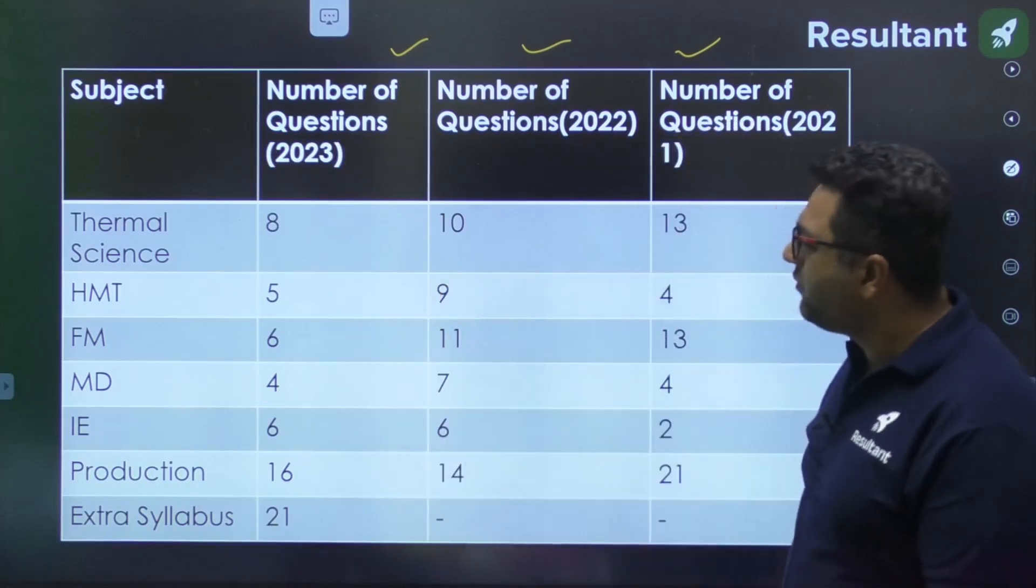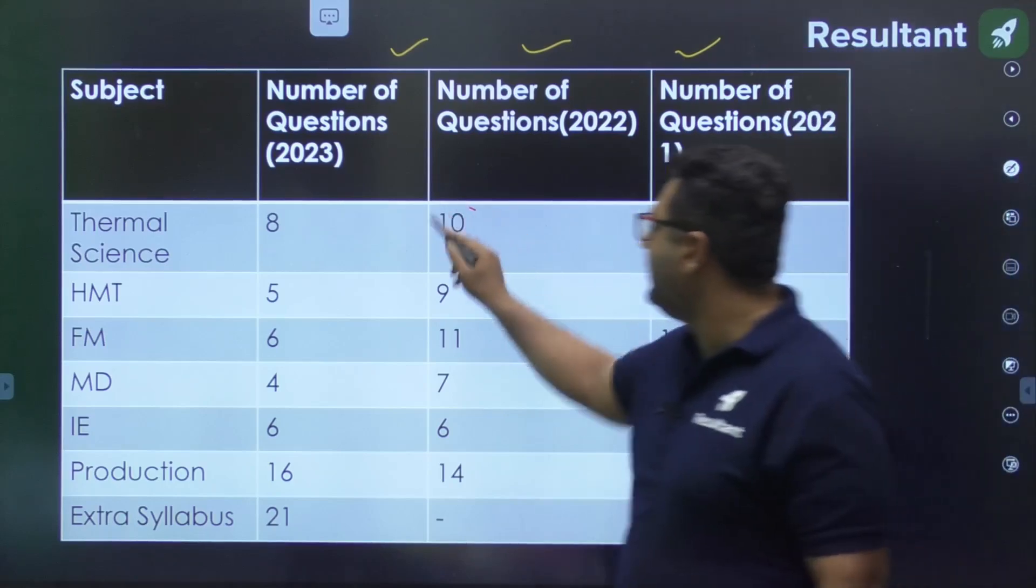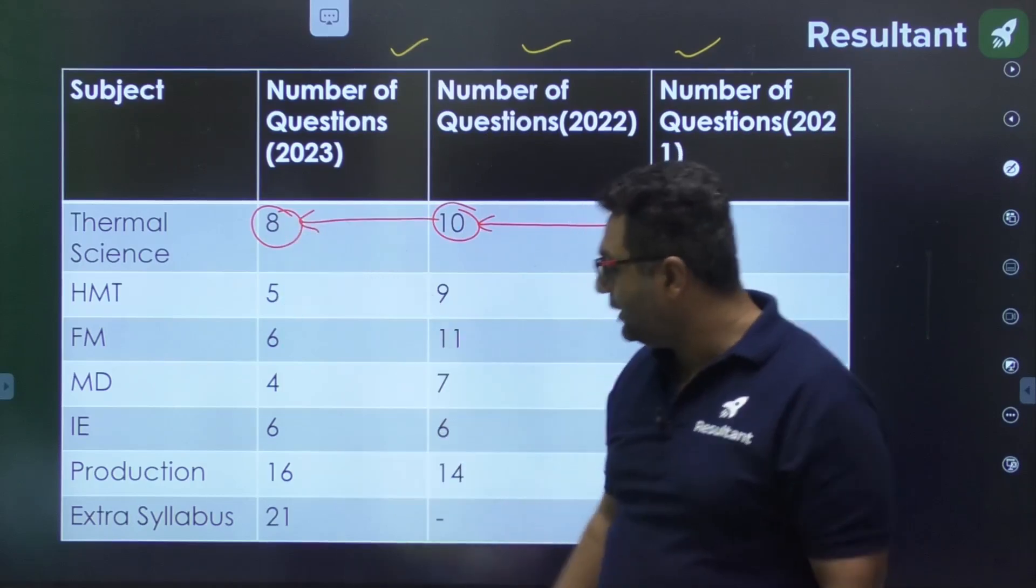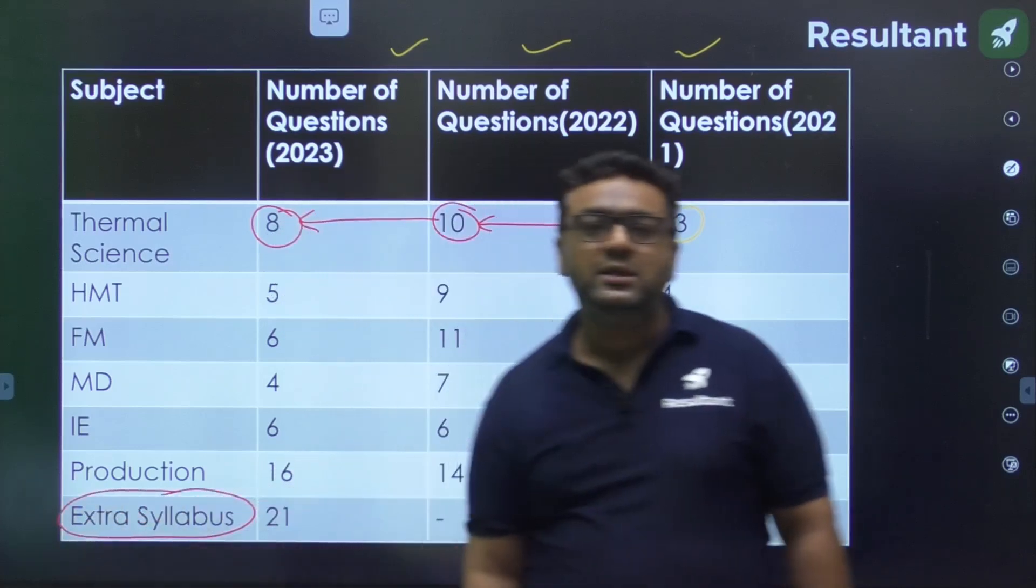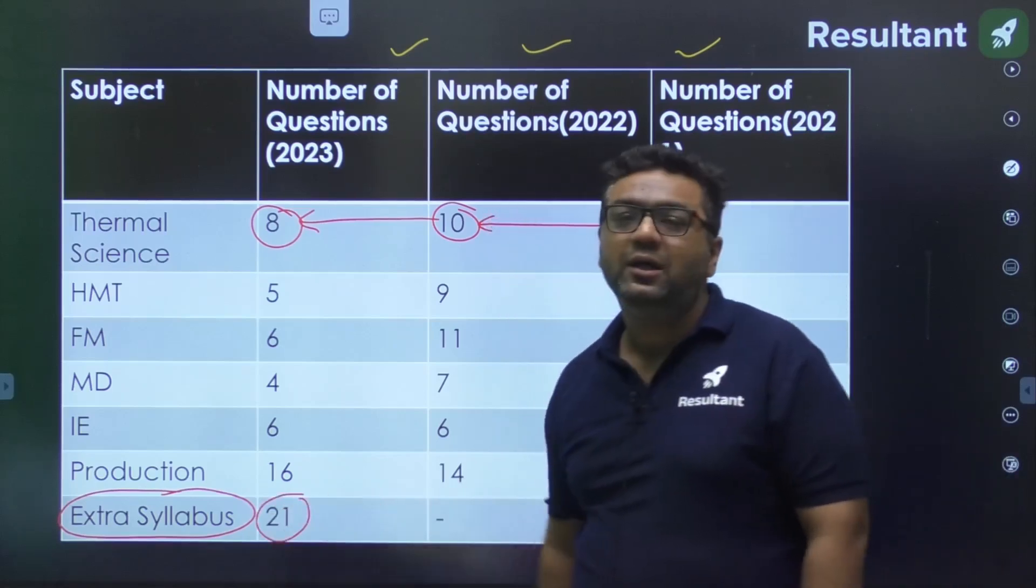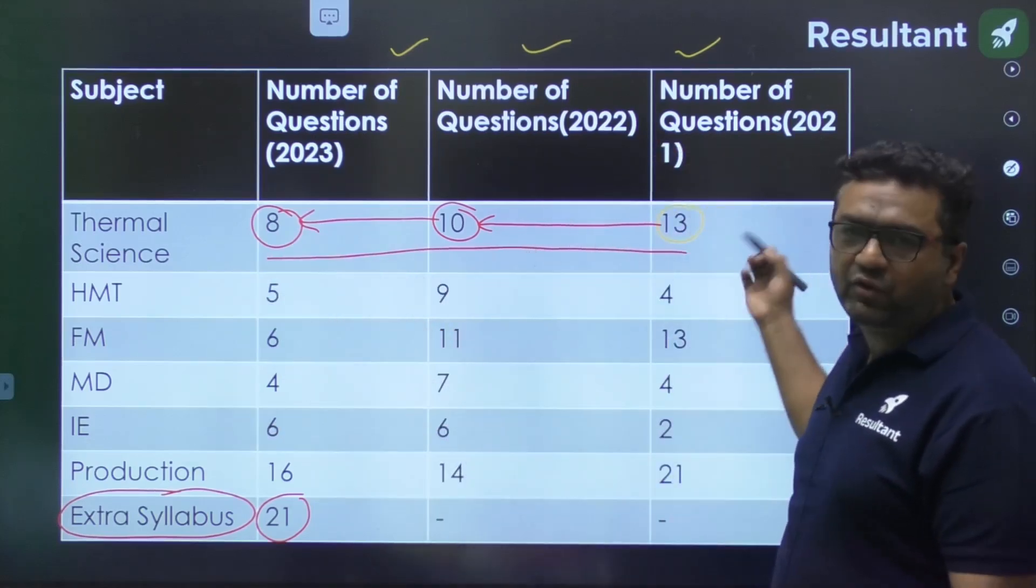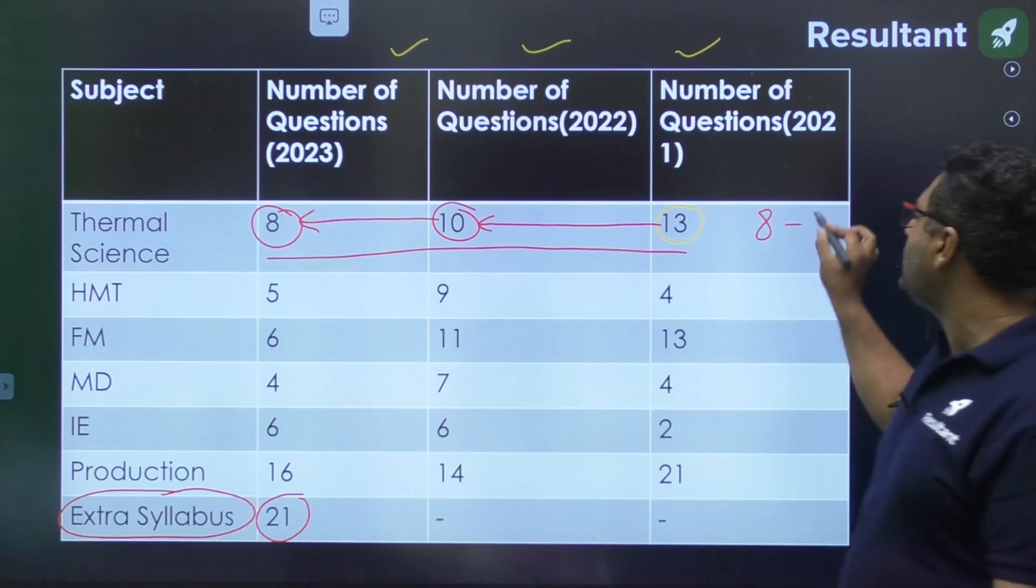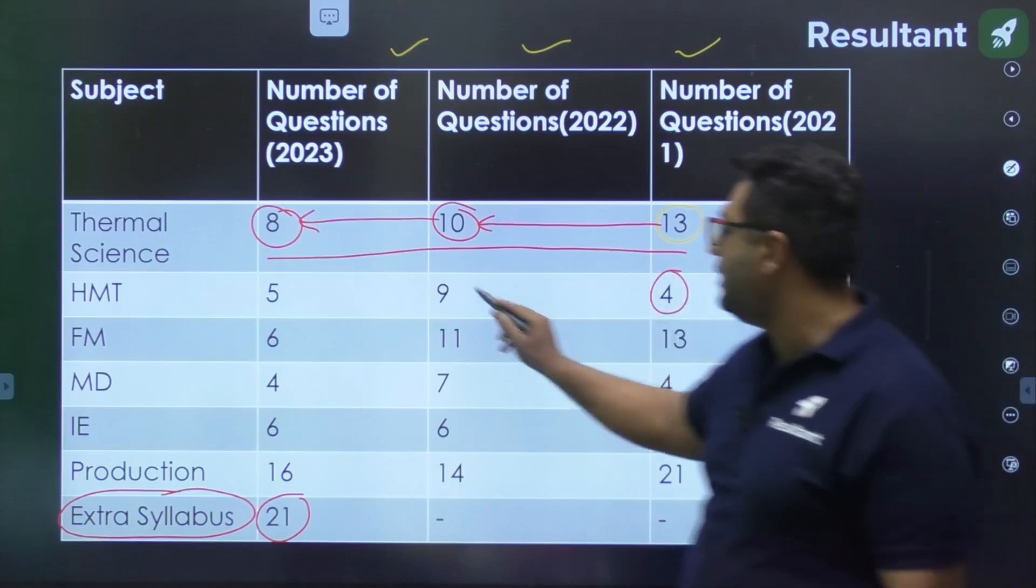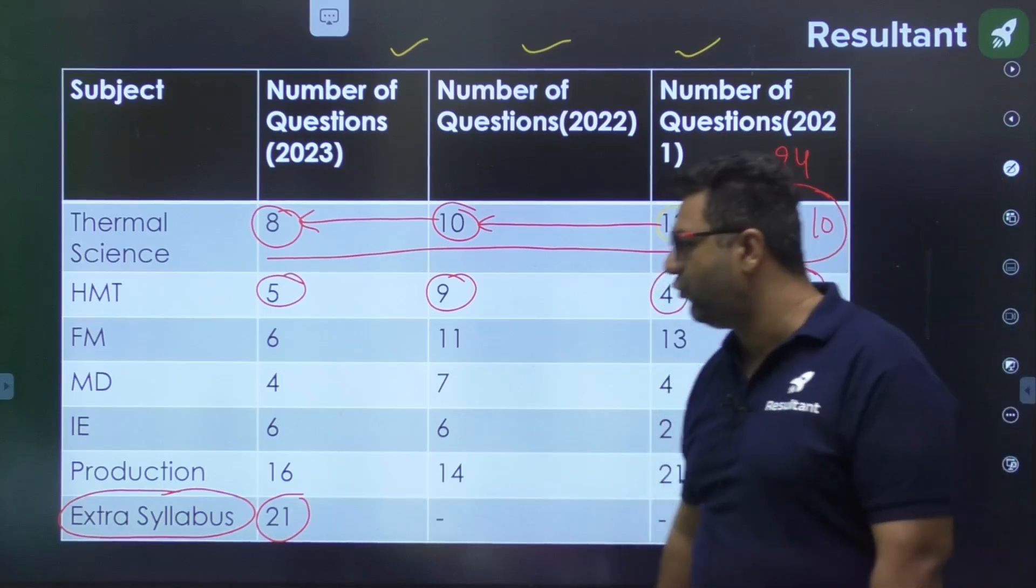First, Thermal Sciences: in 2021, 13 questions, in 2022, 10 questions, and in 2023, 8 questions. You may be thinking weightage is shrinking, but the reason is that in 2023 some extra syllabus of ESE Paper 1, basic civil engineering and electrical machines were added. That weightage of 21 questions was covered by these reductions. For this year, expect somewhere between 8 to 10 marks. For HMT, it was 4 questions, then 9, then 5. HMT is a small subject, you can expect 5 to 6 questions for HPCL 2024.